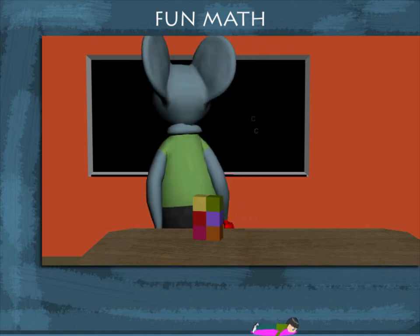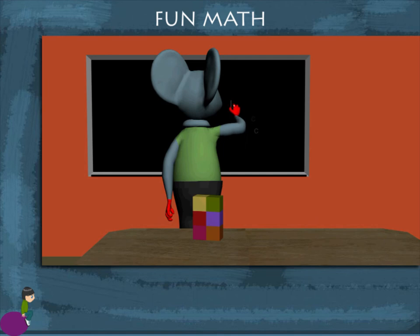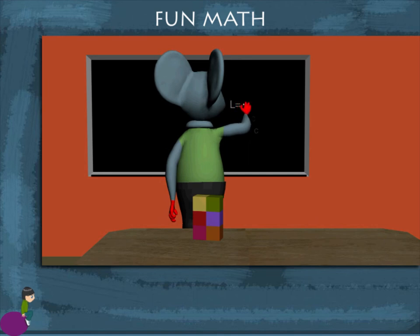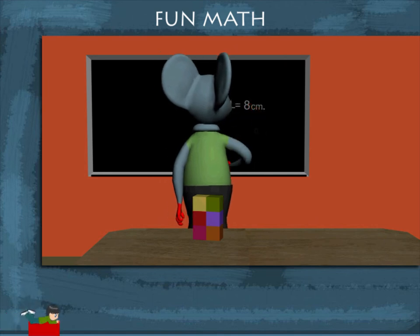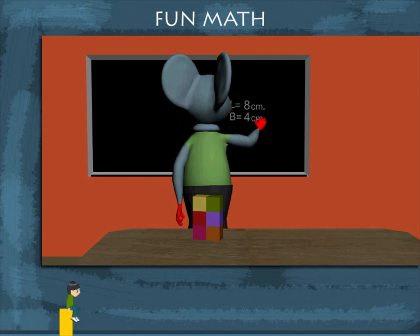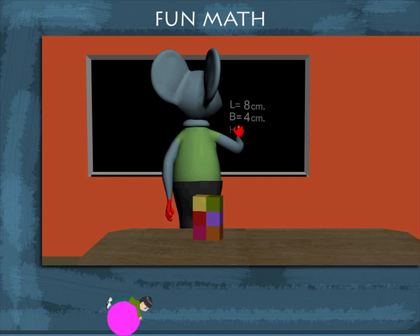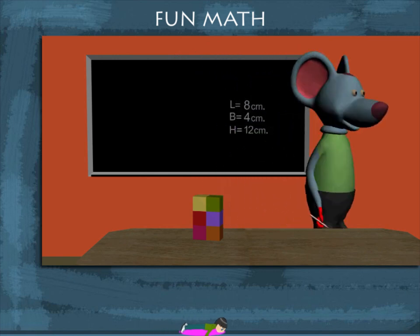Toby now writes the dimensions of his new shape. Length equals eight centimeters because of two cubes, breadth is four centimeters due to one cube, and height is twelve centimeters as it is made of three cubes. Smart mouse!